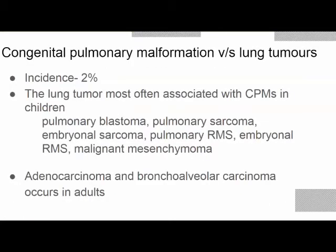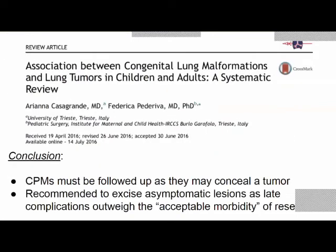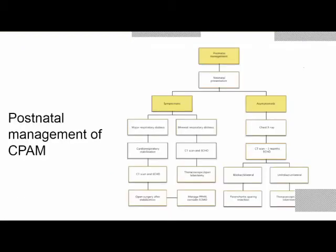The incidence of malignancy associated with CPAM is about 2%. Lung tumors most often associated include pulmonary blastoma, pulmonary sarcoma, embryonal sarcoma, pulmonary rhabdomyosarcoma, malignant mesenchymoma, adenocarcinoma, and bronchioalveolar carcinoma in adults. A systematic review on association between congenital lung malformations and lung tumors recommends that all pulmonary malformations in children must be followed closely, and excision of asymptomatic lesions is recommended as late complications outweigh the acceptable morbidity of resection.